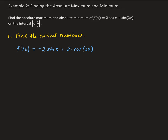Setting the derivative equal to 0, we have: -2sin(x) + 2cos(2x) = 0. To solve this, we need to use one of the trig identities. Specifically, cos(2x) = 1 - 2sin²(x).